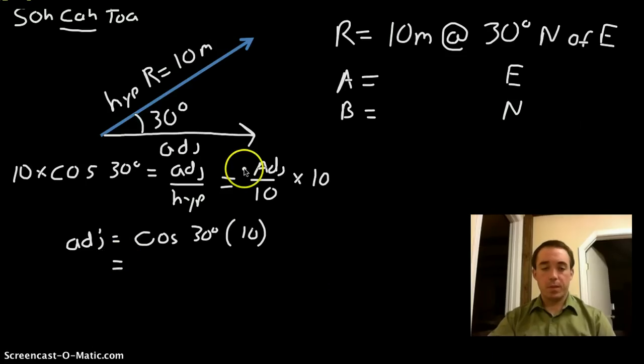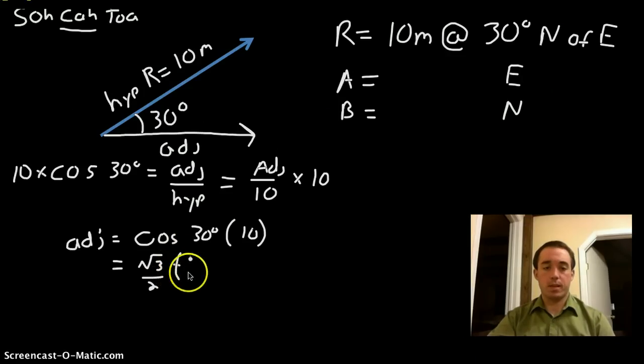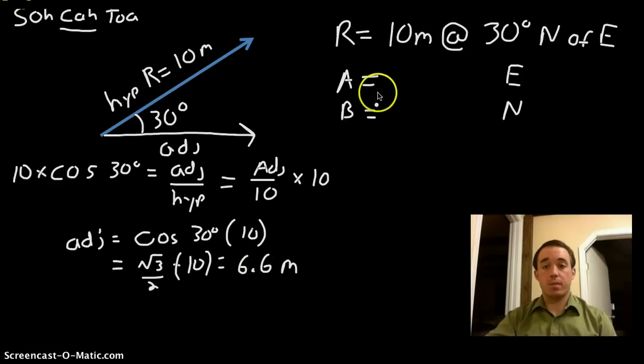You can see that it's 10 times cosine 30. If memory serves me correctly, cosine of 30 is square root of 3 over 2, roughly 0.66. So 0.66 times 10, if you do it in your calculator, will be roughly 6.6 meters. So we just found our vector A. It's 6.6 meters east.